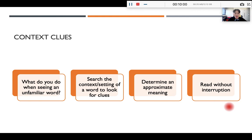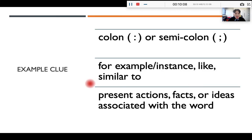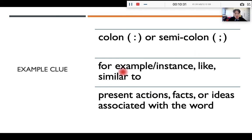Now I'm going to teach you three kinds of context clues. The first one is called the example clue. How do you know when to use an example clue? Pay attention to punctuation marks — if you see a colon or semi-colon, they signal the occasion to use an example clue. Or if you see words like "for example," "for instance," "like," or "similar to" — these are all signals of an example clue. People give examples to present actions, facts, or ideas associated with the word, and example clues can definitely help you find the meaning of an unfamiliar word.